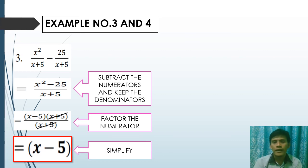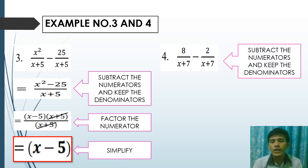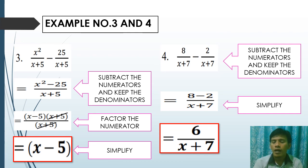The remaining factor is x minus 5, and that will be our final answer. Example number four: 8 over (x plus 7) minus 2 over (x plus 7). The given problem has similar denominators, which is x plus 7. Subtract the numerators and keep the denominator: 8 minus 2 over x plus 7. Simplify 8 minus 2, which is 6, so the answer is 6 over x plus 7, which is already in simplest form.